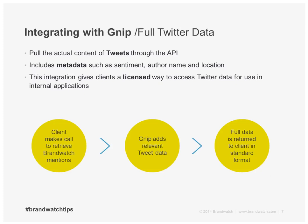The exciting part of the new Brandwatch premium API, and where Gnip is involved, is that you can now actually get the full content of tweets along with the analytics that Brandwatch provides. This is the first integration we've done like this with a partner — it lets you use queries defined in the Brandwatch system plus additional filtering parameters to make very custom queries for Twitter data that also include all of Brandwatch's metadata like sentiment, location, demographics, and influence, all in one response.